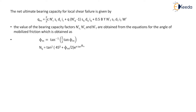Using the mobilized friction angle φm, the bearing capacity factors for local shear failure are: Nq = tan²(45° + φm/2)·e^(π·tan φm), Nc = (Nq − 1)·cot φm, and Nγ = 2·(Nq + 1)·tan φm.